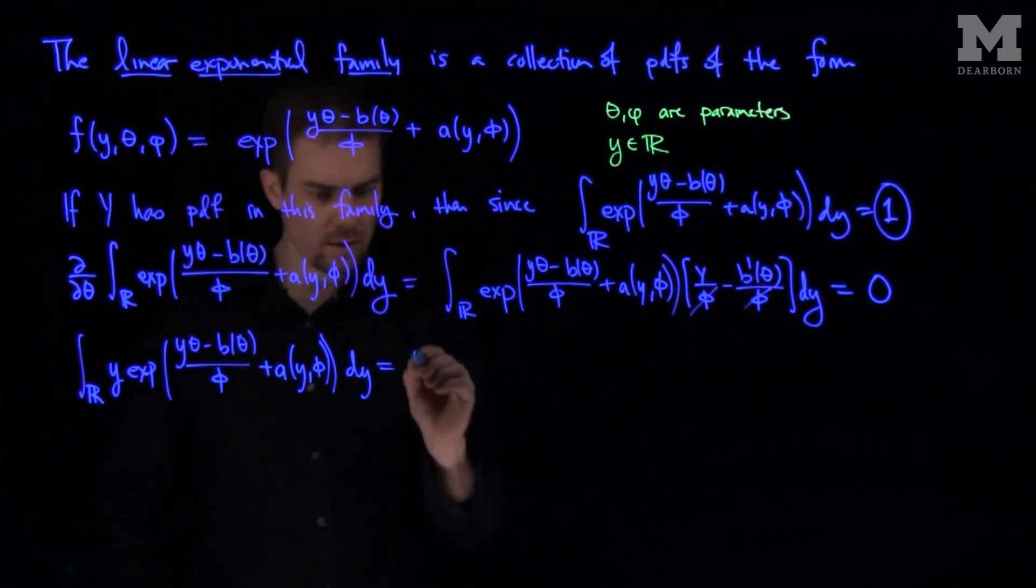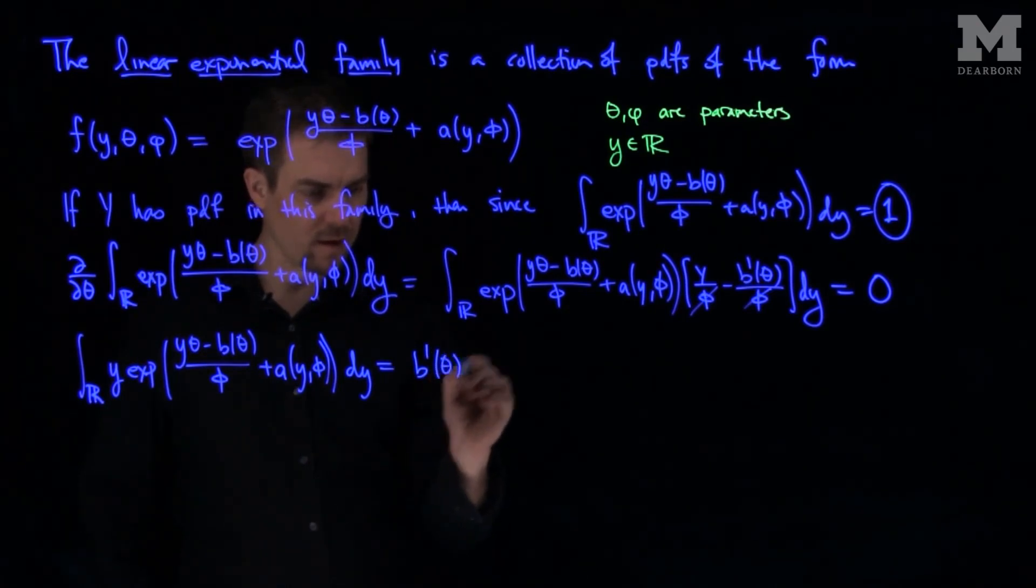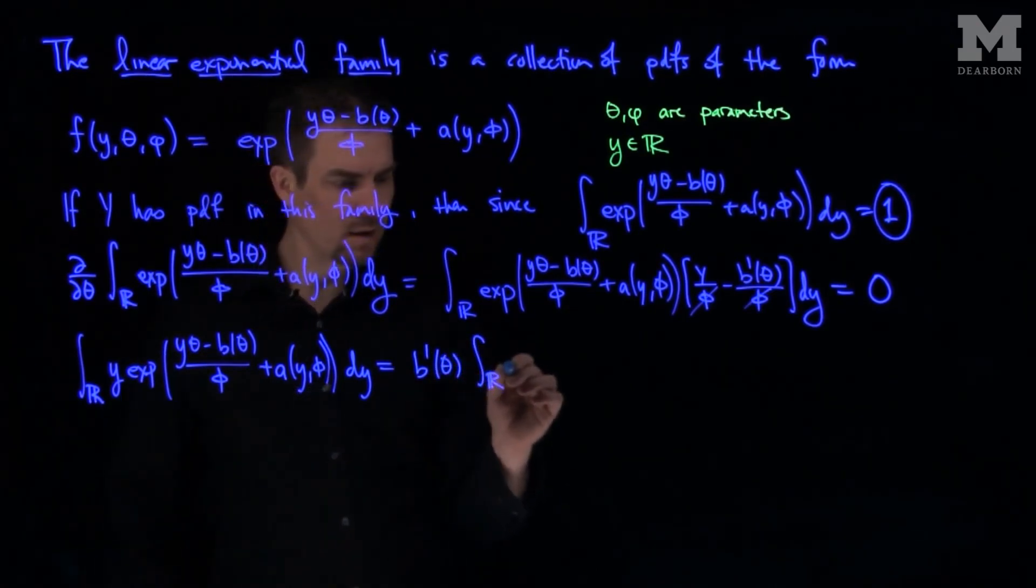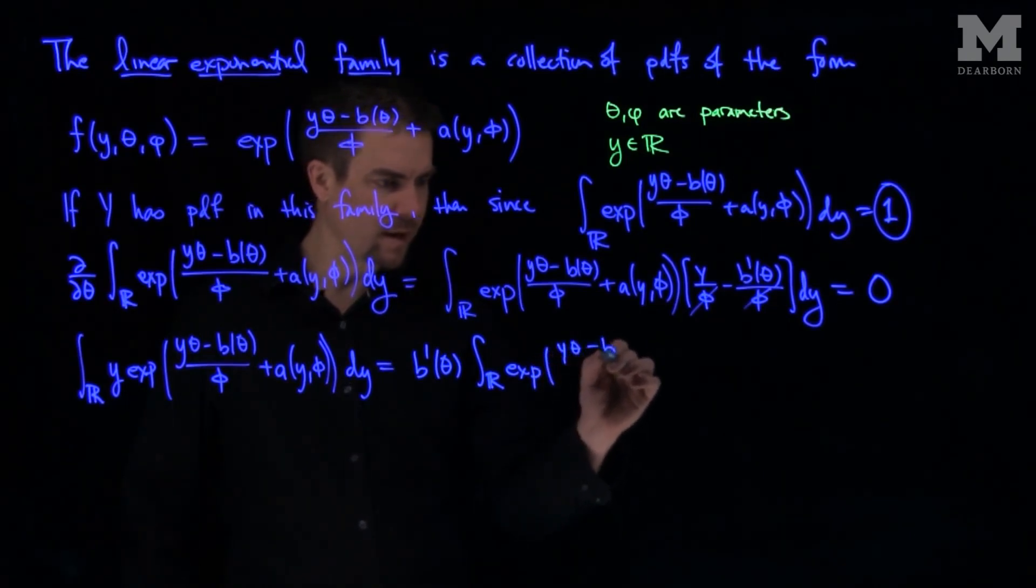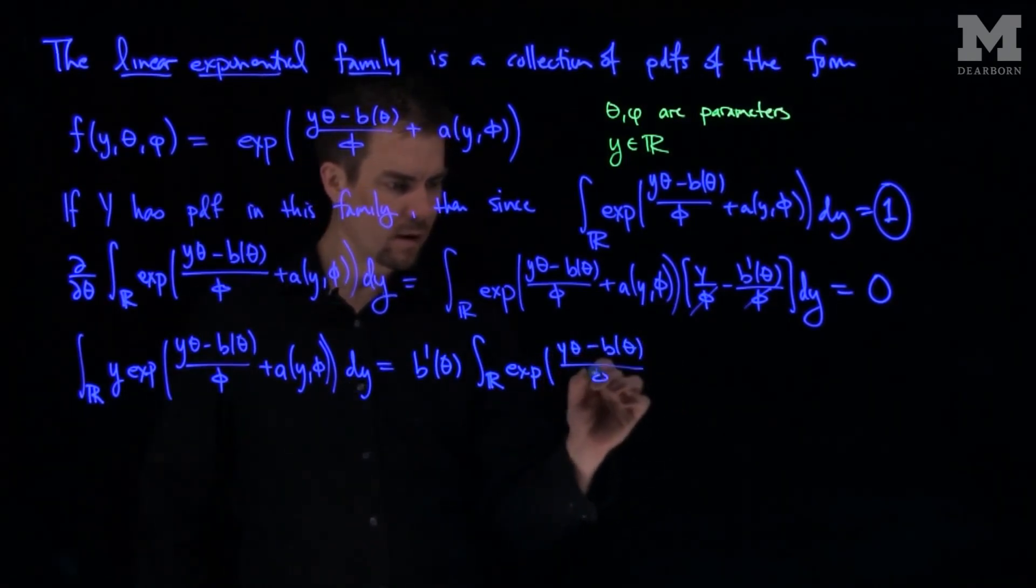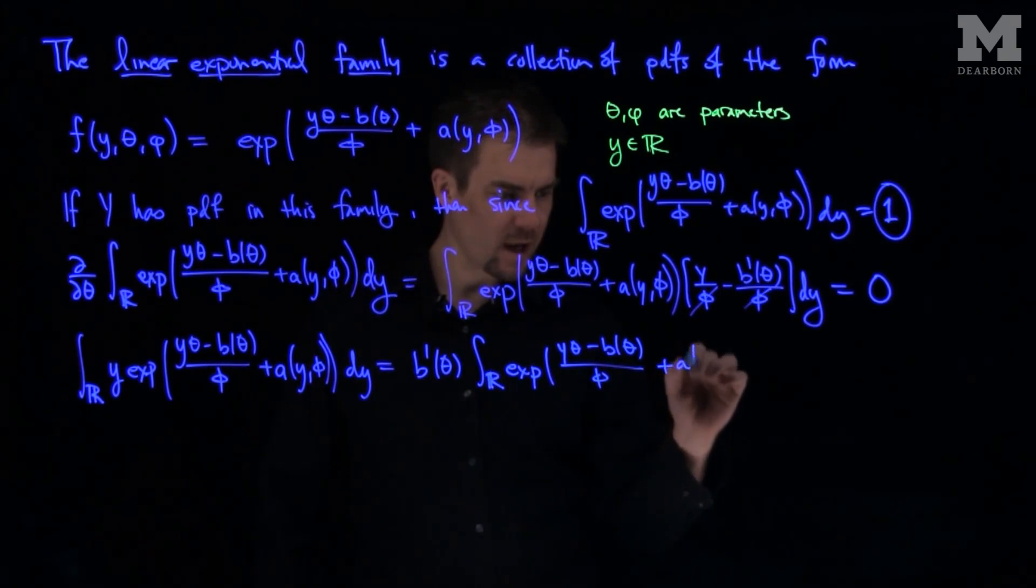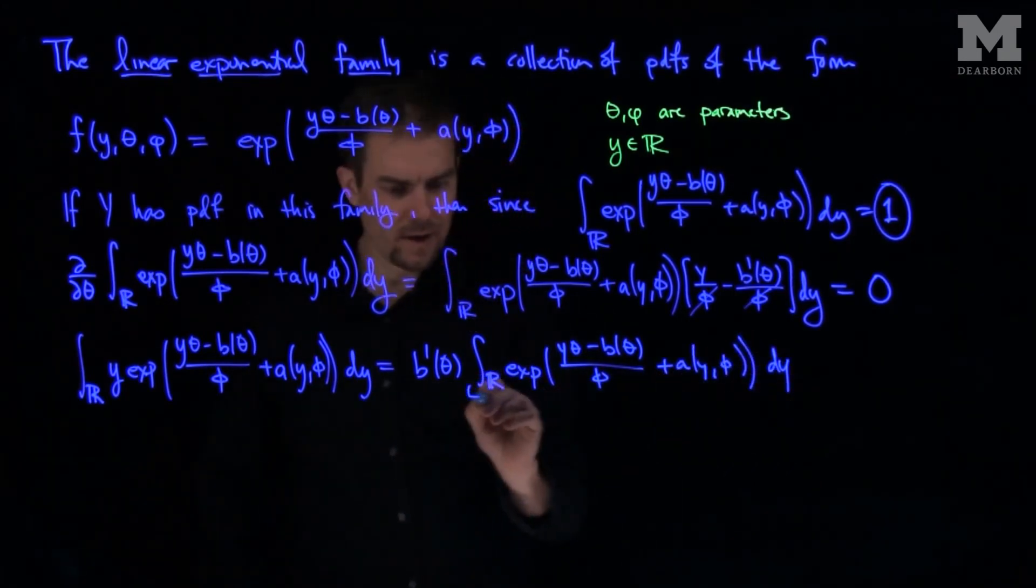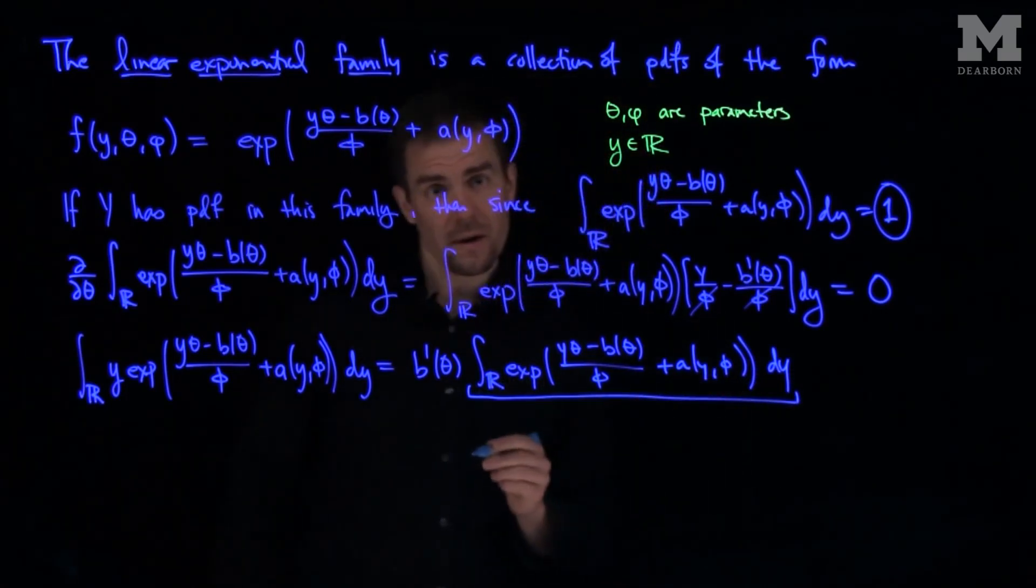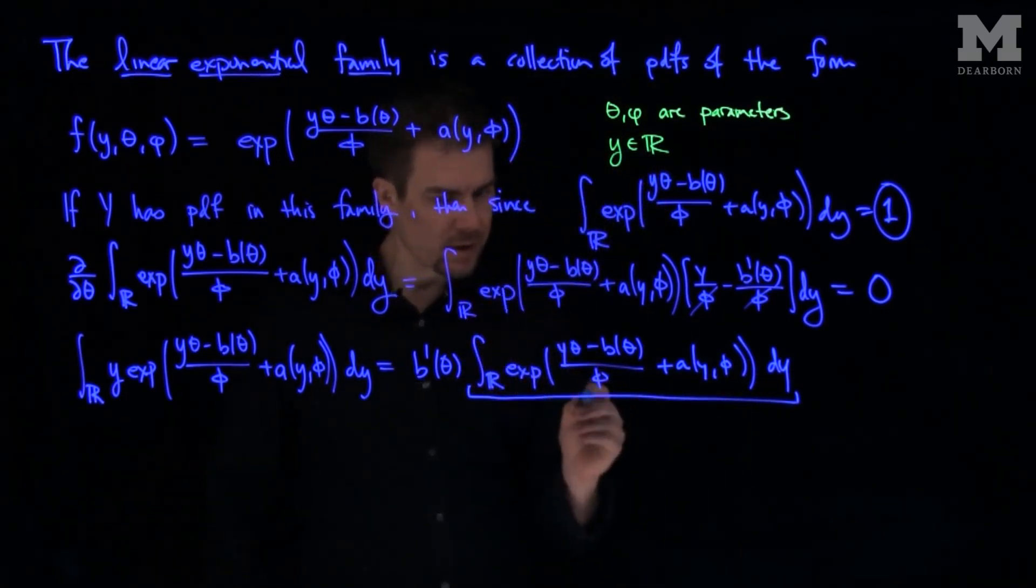We can pull b'(θ) out of the integral: b'(θ) times the integral over ℝ of exp((yθ - b(θ))/φ + a(y,φ)) dy. This integrates to 1.